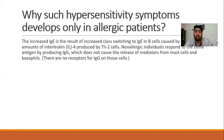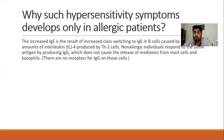Why do these type 1 hypersensitivity symptoms develop only in allergic patients, not in non-allergic patients? In an allergic patient, the T-helper 2 cell releases interleukin-4, and this interleukin-4 stimulates B cells to class-switch from IgG to IgE. So when the allergen enters the body, T-helper 2 stimulates and releases interleukin-4, and the B cell causes class switching of IgG to IgE. In a non-allergic patient, such class switching does not occur. The IgG will attack the allergen, but there are no receptors for IgG on the surface of mast cells, so there is no release of substances and no symptoms.